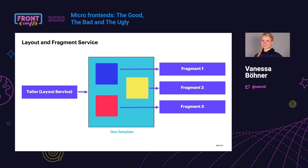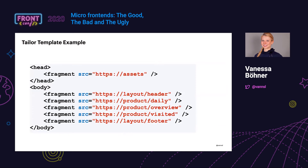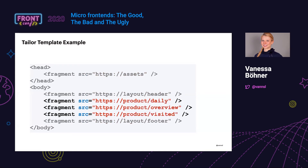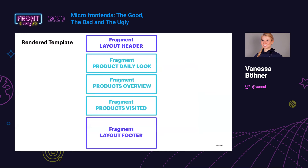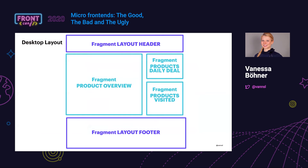The layout service Tailor points to a template containing the three fragments. The code looks similar to normal HTML: you have a head and fragment tags — it's basically the same syntax as iframe but using 'fragment' instead. For example, you load fonts or icons by pointing a fragment to a source. For a page you might have fragments for header, footer, product daily overview, and products visited. In the layout service, it's easy to rearrange fragments in a CSS grid, so fragments themselves don't need to position themselves — they just need to be responsive.